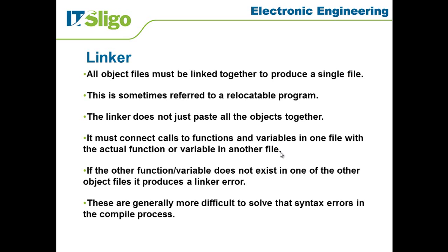Now, if the other function or variable that you've referred to — even though you've referred to it correctly and obeyed all the rules — can't be found, this could happen because a library file might be missing, or there could be some issue with another file not being compiled properly, so the proper library or object never got created. If there's a compile problem in one file, that can affect the others. So if the function or variable does not exist in one of the other object files, this produces a linker error. You will sometimes see it compiles OK, and then it says there's a linker error. When you click on the linker error, it doesn't tell you really where the problem is, or it gives only a little information. The problem is that this is not a syntax mistake — it's where you've made reference to some function and the linker cannot find the actual implementation of that function or variable.